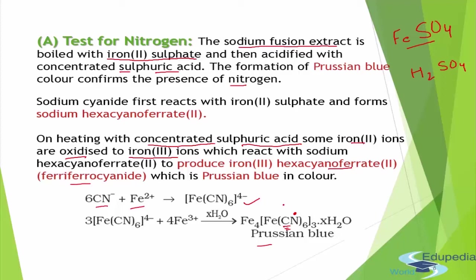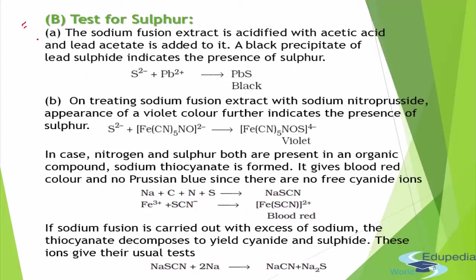Next, test for sulfur - there are two tests. For the first test, we take the sodium fusion extract, acidify it with acetic acid (CH3COOH), and add lead acetate [Pb(CH3COO)2]. If we get a black precipitate of lead sulfide, it confirms the presence of sulfur. The sulfide comes from the fusion extract and lead comes from lead acetate.